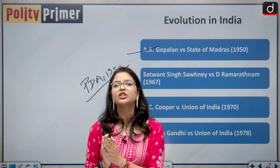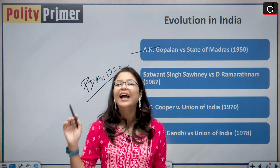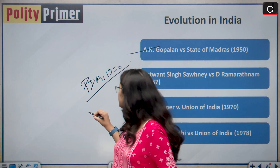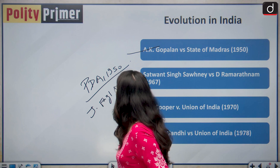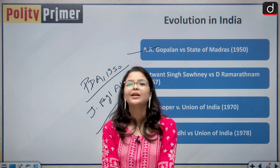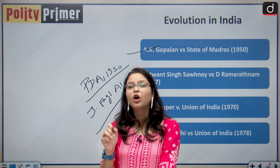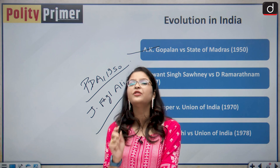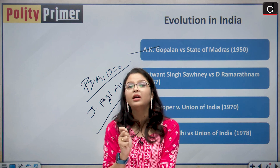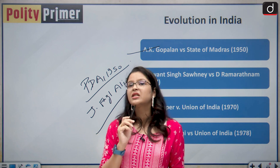The court in A.K. Gopalan distinguished between procedure established by law and due process of law. The case is also famous for the notable dissent of Justice Fazl Ali, who said Article 21 cannot be violated without a reasonable and just procedure. He was the first judge to acknowledge that the procedure must be fair, that the person whose personal liberty is being deprived must have an opportunity of being heard and a fair trial.